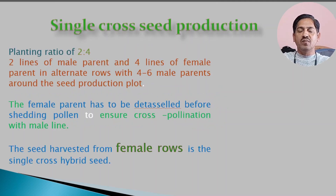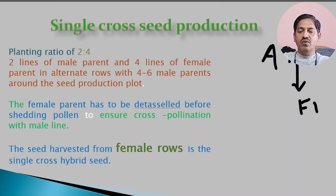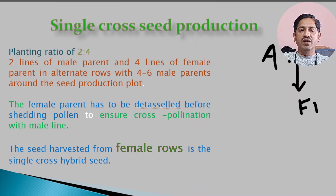Now, what is single cross and double cross seed production? In single cross seed production, suppose you have one inbred line and another inbred line. If you make a cross between these two lines, the final product is a single cross hybrid. In the planting layout, you grow two rows of male and four rows of female parent, so that sufficient pollen is available to fertilize the female rows.